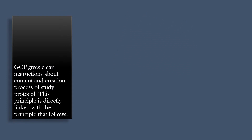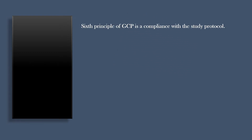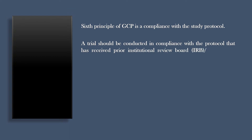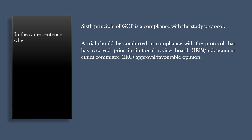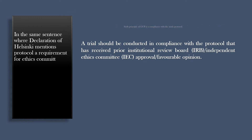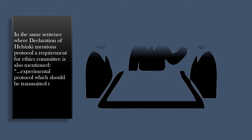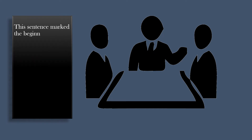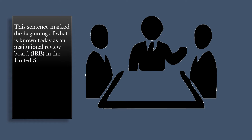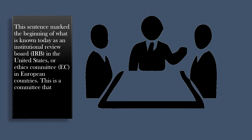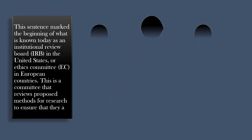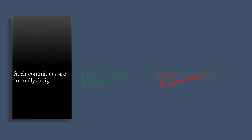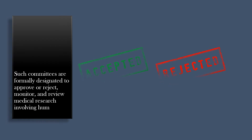The sixth principle of GCP is compliance with the study protocol. A trial should be conducted in compliance with the protocol that has received prior Institutional Review Board, IRB, or Independent Ethics Committee, IEC, approval or favorable opinion. In the same sentence where the Declaration of Helsinki mentions a protocol, a requirement for an Ethics Committee is also mentioned — the experimental protocol should be transmitted to a specially appointed independent committee for consideration, comment and guidance. This marked the beginning of what is known today as an Institutional Review Board, IRB, in the United States, or Ethics Committee, IEC, in European countries — a committee that reviews proposed methods for research to ensure that they are ethical, formally designated to approve, reject, monitor, and review medical research involving human subjects.